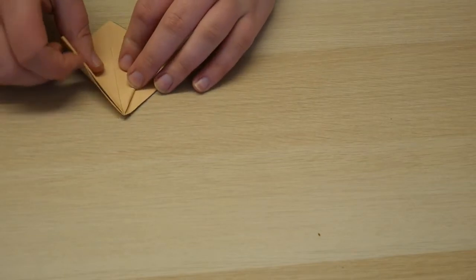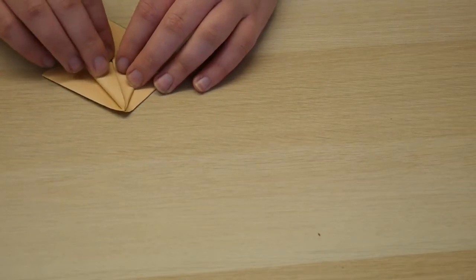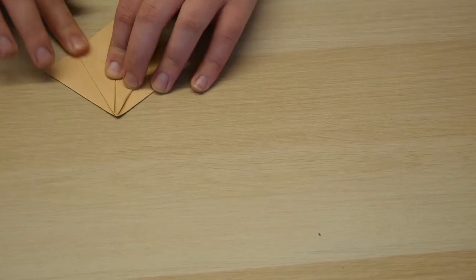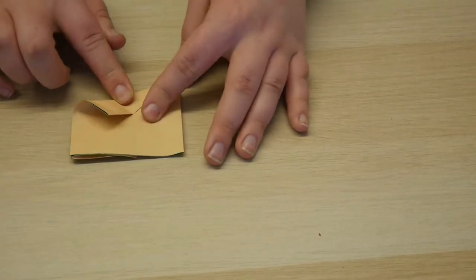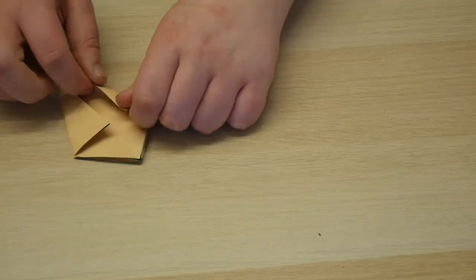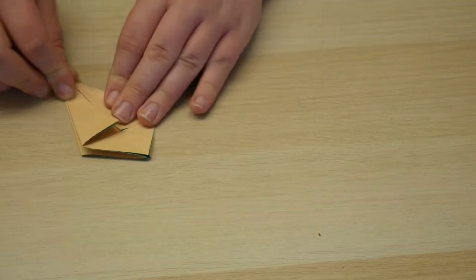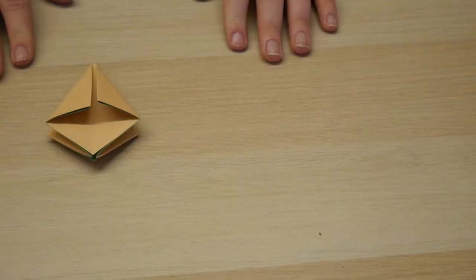I'm just going to take each one, I'm just going to fold each closed side to the center. Turn it over, closed edge to the center and again the closed edge to the center just like that. So now we have like a little kite.